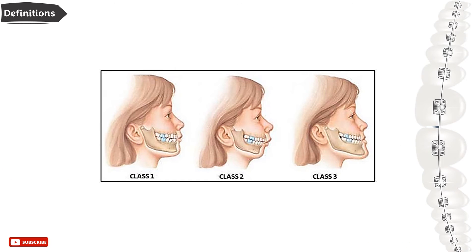In Class 3, the lower incisor edge lies anterior to the cingulum of the upper incisors and the overjet is decreased or reversed. This diagram shows the relation between the maxilla and mandible in different classes. In Class 1, the maxilla is slightly protruded relative to the mandible. In Class 2, the maxilla may be severely advanced, the mandible severely retruded, or a combination of both. In Class 3, the maxilla may be severely retruded, the mandible severely advanced, or a combination of both.